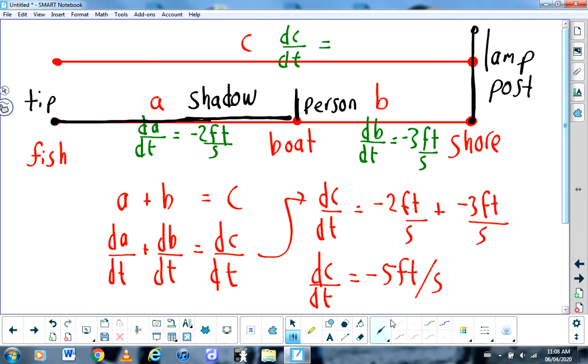with the difference between finding the rate at which a shadow is changing, analogous to the rate at which you're reeling the fish in, and the rate at which the tip of the shadow is moving, which is the rate at which the fish is approaching the shore. I hope that helps. Have a great day.